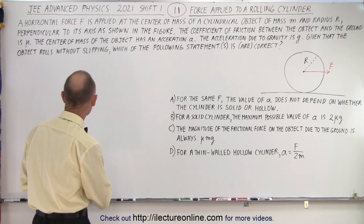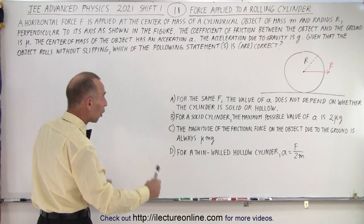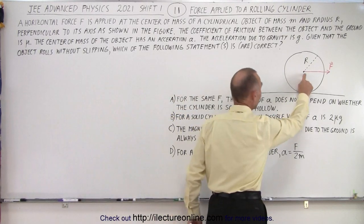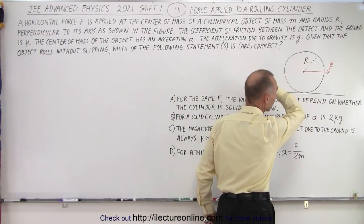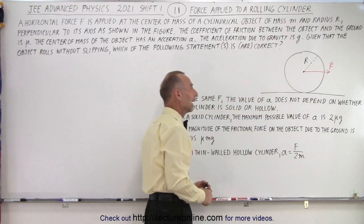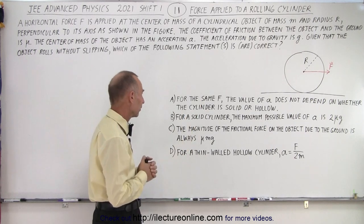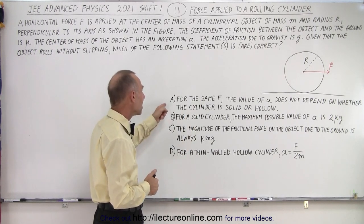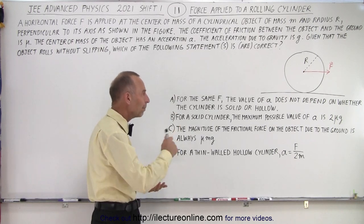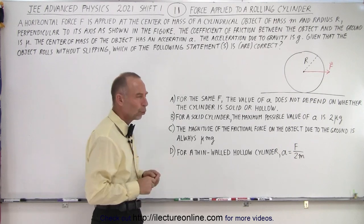Given that the object rolls without slipping, which of the following statements is or are correct? So it's a simple concept. There's a force acting at the center of mass. This is a cylindrical object. It's rolling on the floor. There's friction between the floor and the cylindrical object. And which of these four answers applies or is correct? So here it says A, for the same F, the value of A, the acceleration, does not depend on whether the cylinder is solid or hollow.